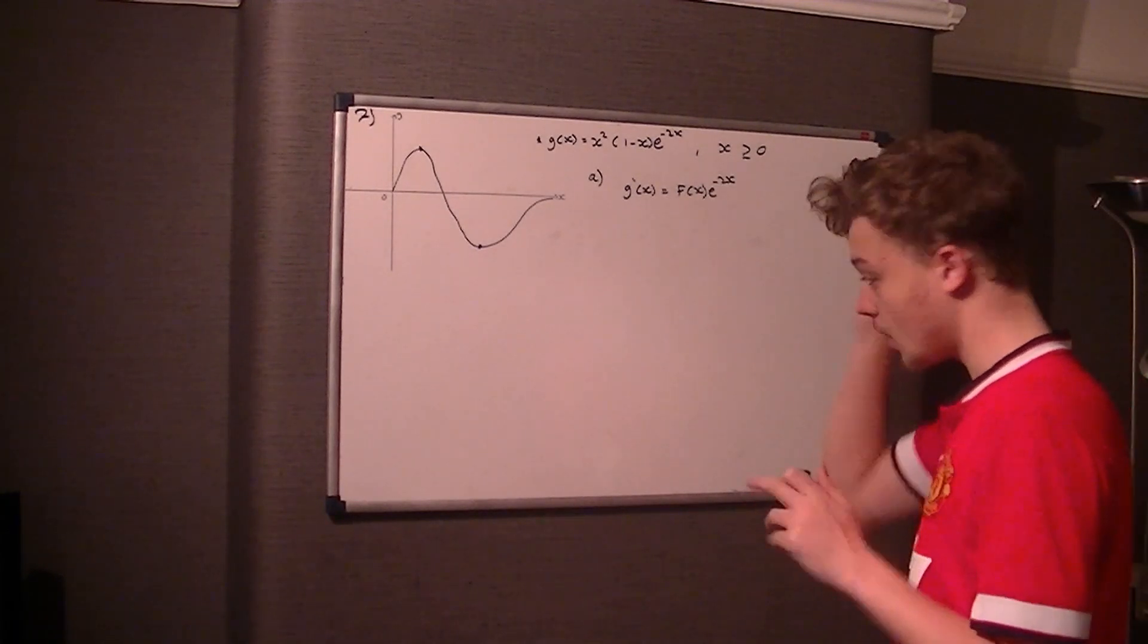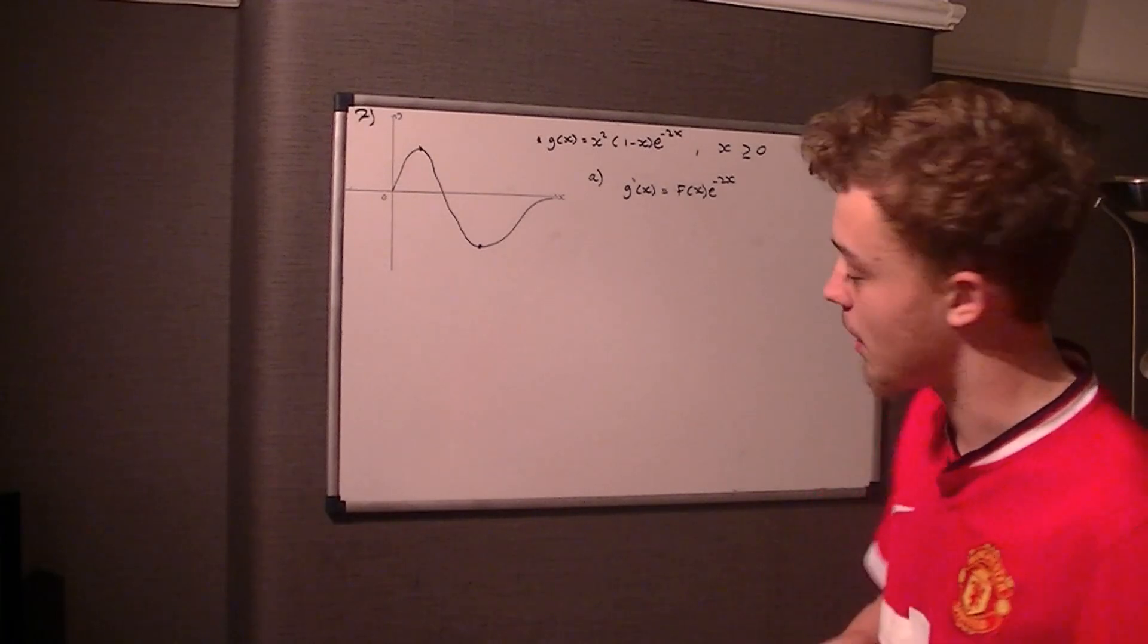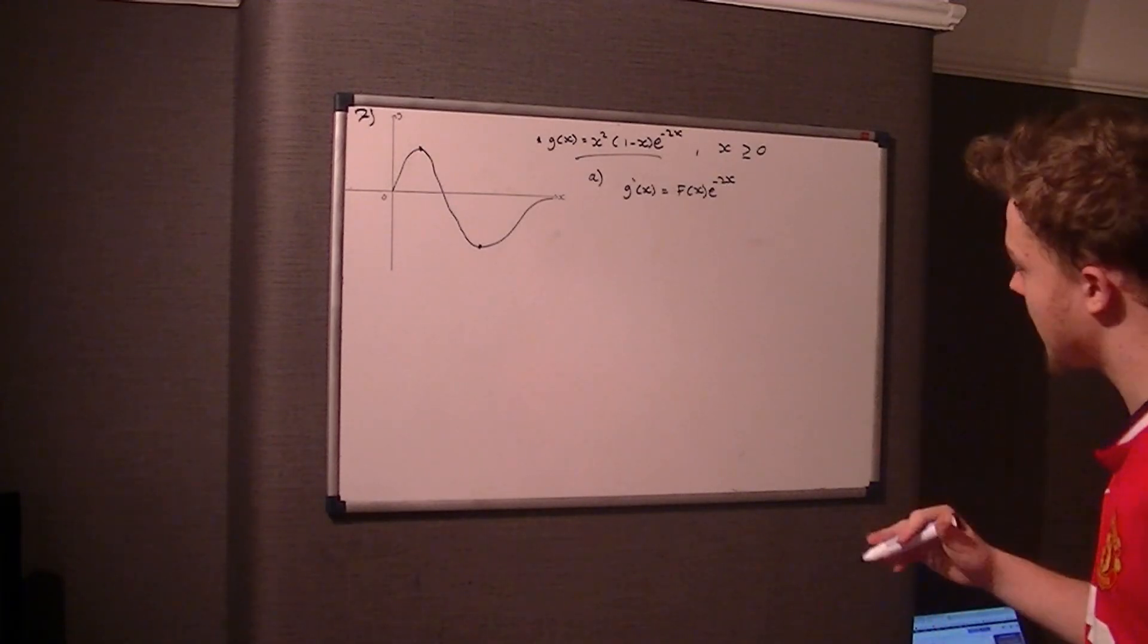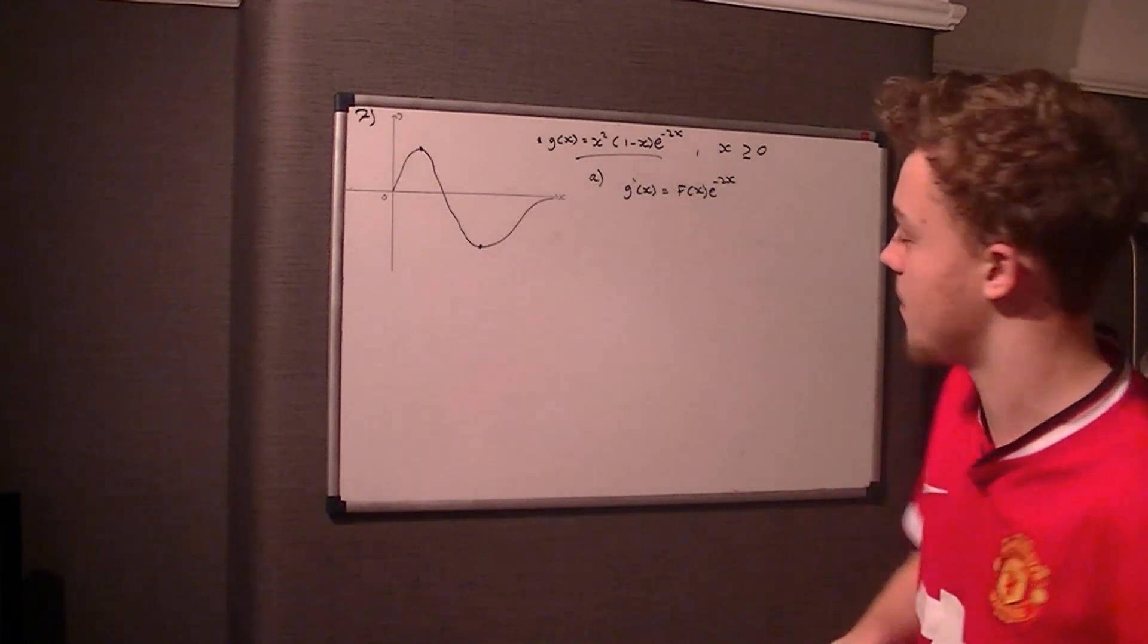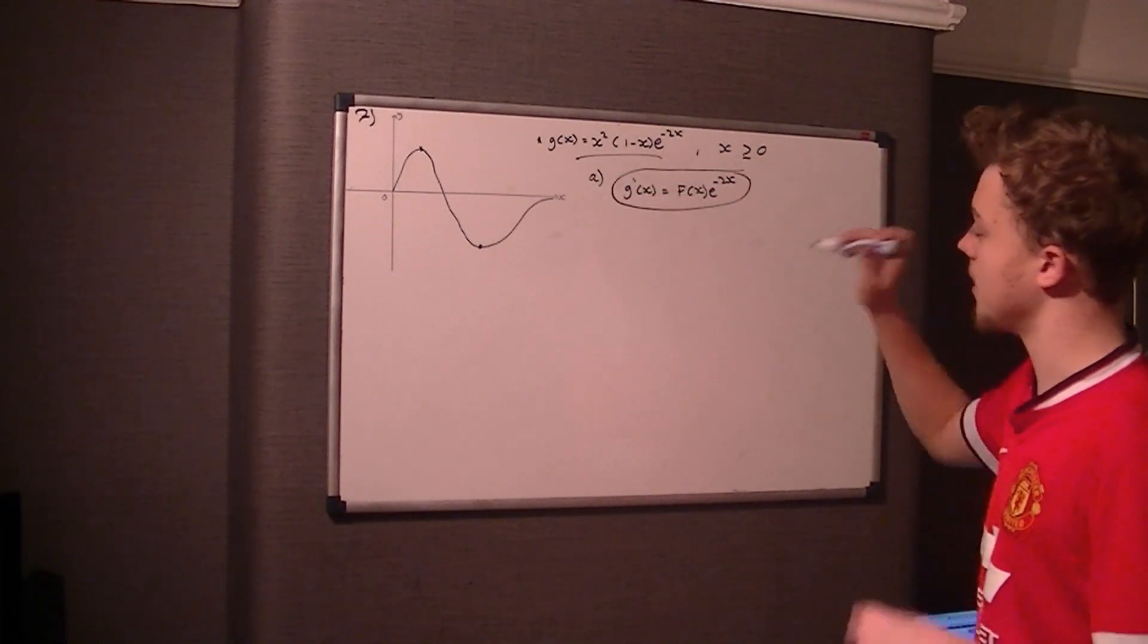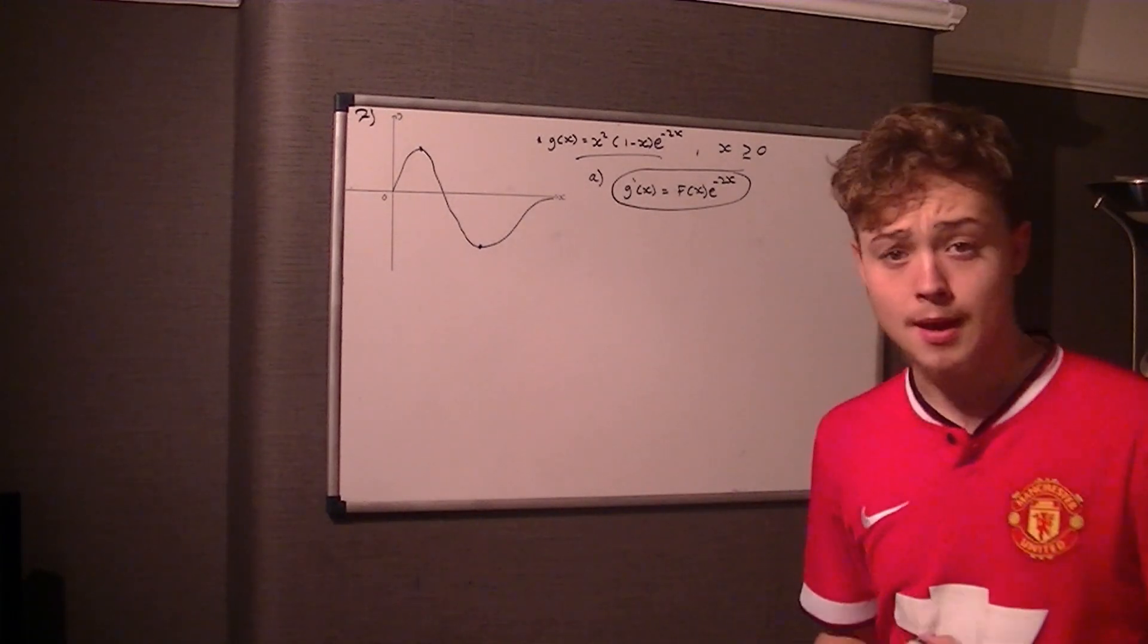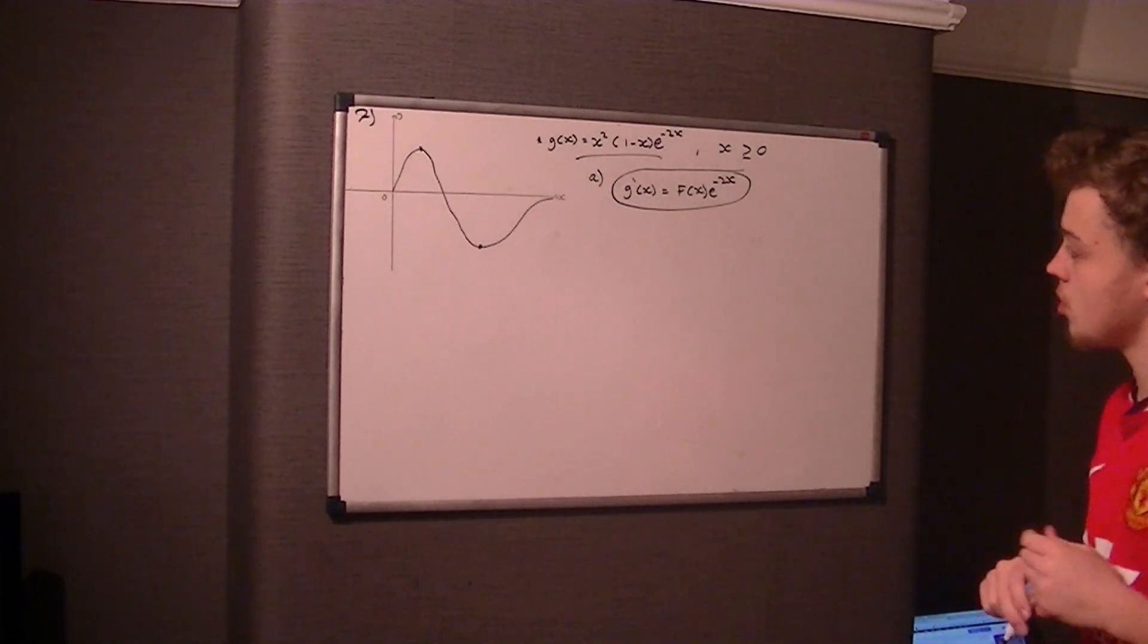The first question says put it in this form where the derivative of g of x is equal to another function of x times e to the power of negative 2x. Now a couple of things should be stirring your mind here. We've got to find the derivative of g of x and then take out e to the negative 2x as a common factor and leave you with another function of x. We're also told that this other function of x, f of x, is a cubic.